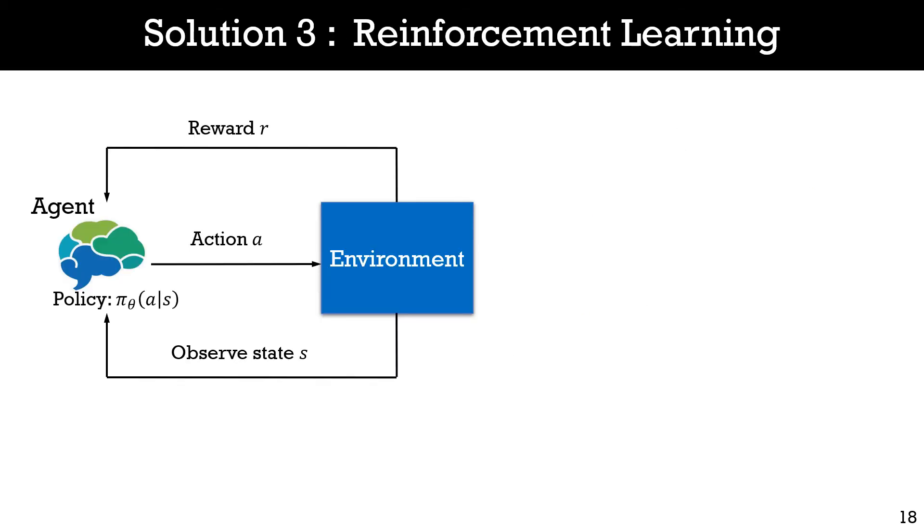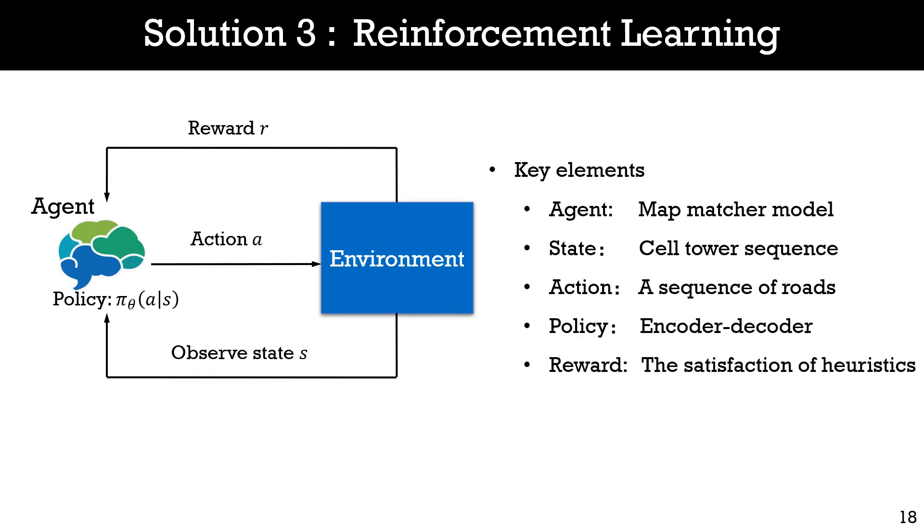But how to incorporate such heuristics into the map matching model is the problem. To incorporate the heuristics, we develop a reinforcement learning scheme. It has a well-defined reward function to encourage the map matching road sequence to meet the above three heuristics. As shown, given a state observed from the environment, the policy of the agent learns to map from a state to an action. A reward is then designed to estimate how good or bad the current action or a sequence of actions is.